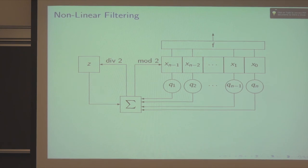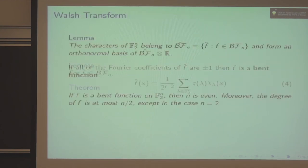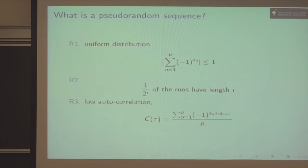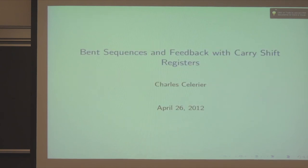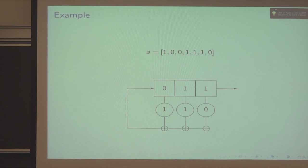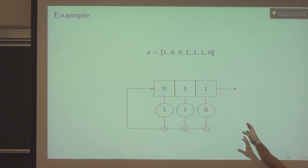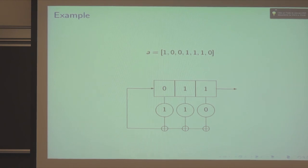Question from the audience: What is an M sequence? The state of the register is represented by all the boxes, which can be read as a binary number. For a length-3 register, there are 2^3 possible states. If the register produces an M sequence, it goes through all its possible states while generating the sequence. So an M sequence means the period is maximal coming out of this register.